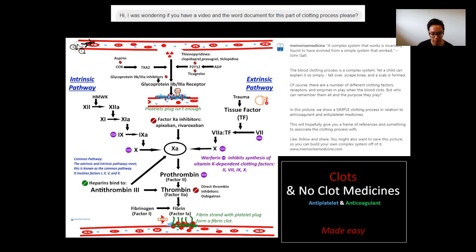In this picture we show a simple clotting process in relation to anticoagulants and anti-platelets. The idea when I first wrote this was that you can simplify the process you need to learn when you put it in relation to the medicines that affect the clotting process — your anti-platelets and your anticoagulants. This gives you a frame of reference and something to associate the clotting process with, making it easier to remember the overall pathway.